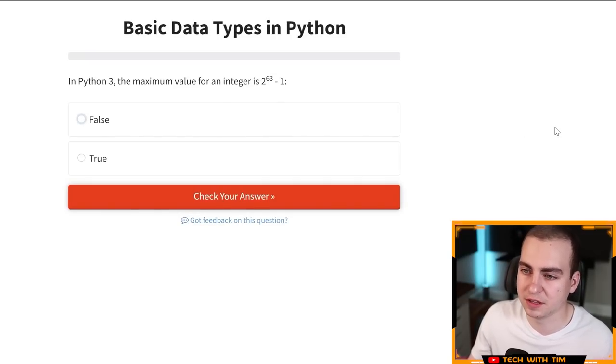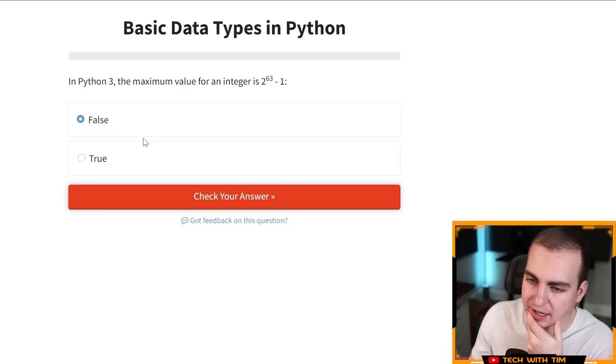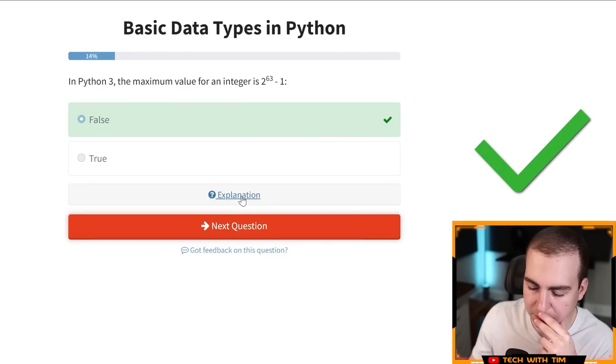In Python three, the maximum value for an integer is two to the 63 minus one. Okay. Already. I have no idea if this is correct or not. I don't even know if there is a maximum value in Python. I've never seen like a maximum. So my feeling is to go false because I don't think there's a maximum, but there also would have to be right. Two to the 63 minus one seems like that would be the maximum if there was one, but I think I'm just going to go with false because again, I have no idea what it would be. So let's just, let's go false. Apparently that was correct.